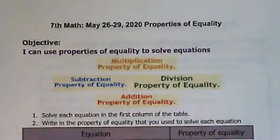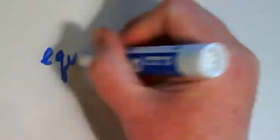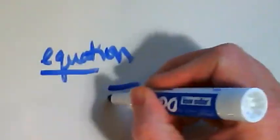So I want you to think about what you know about equations. We know that equations have the word equal in it, which is like equal, and we use the symbol, the equal sign, to show equal. And equations have equal signs.